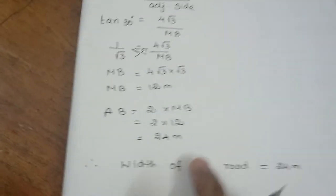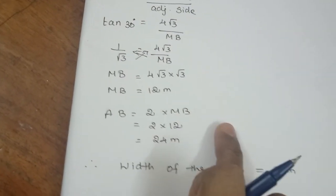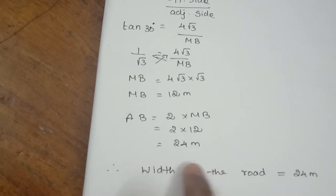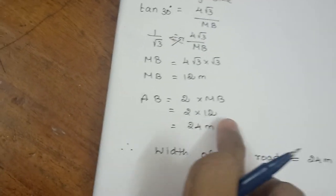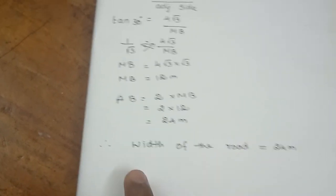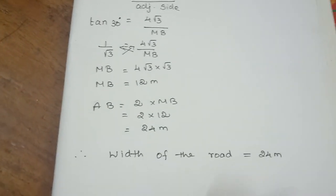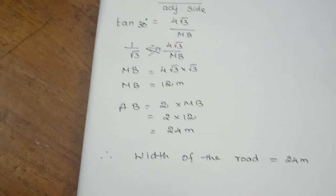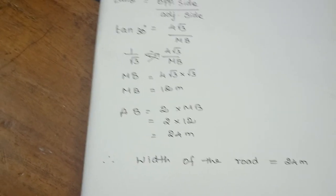So MB is equal to 12 meters. Since M is the midpoint of AB, the total width of the road AB = 2 × 12 = 24 meters. So the width of the road is 24 meters. Like, share, and subscribe. Thank you.